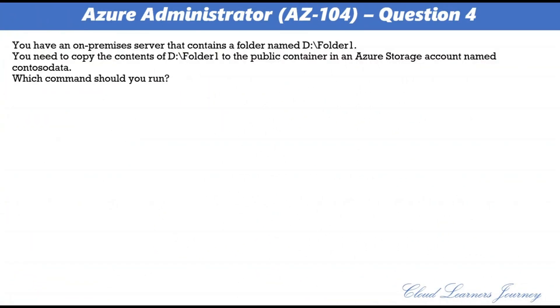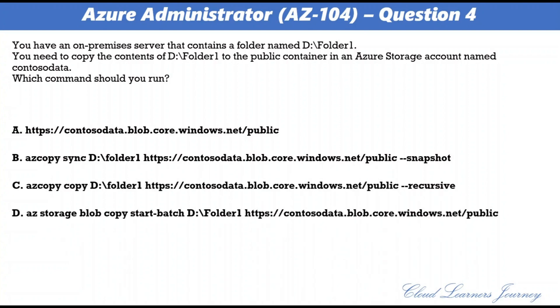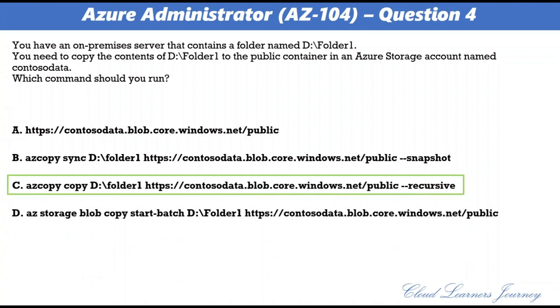Question 4. You have an on-premises server that contains a folder named D:\folder1. You need to copy the contents of D:\folder1 to the public container in an Azure storage account named contourserdata. The correct option is C. The AzCopy command copies a directory and all of the files in the directory to a blob container, resulting in a directory in the container by the same name.